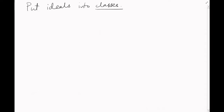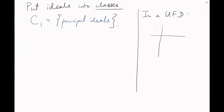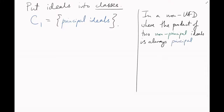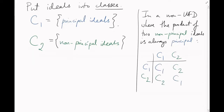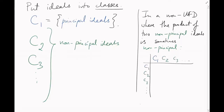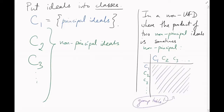So here's what we're going to do. We're going to lump together all the principal ideals into a single category, a single class. In a unique factorization domain, that's going to be all there is — only one class of ideals, the class of principal ideals. Now, if you're not in a unique factorization domain, but the product of two non-principal ideals is always principal like in example 1, then there are two ideal classes: principal and non-principal. If the product of two non-principal ideals is again sometimes non-principal like in example 2, then we'll have to put our ideals into more than two classes. In fact, ideal classes will always form a group under multiplication — I won't assume you know any group theory here, but it's a fact for those of you who do.